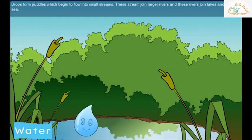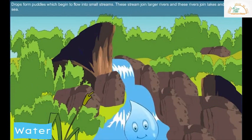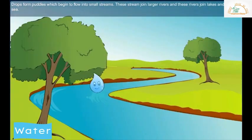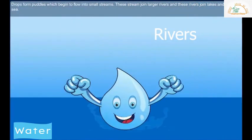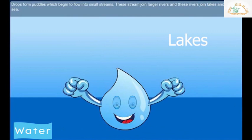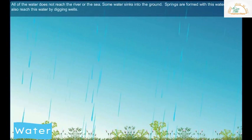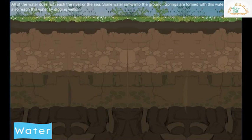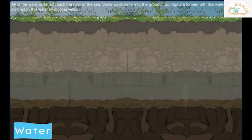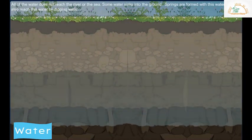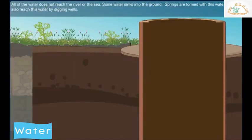These puddles begin to flow into small streams. These streams join larger rivers, and these rivers join lakes and then the sea. All of the water does not reach the river or the sea. Some water sinks into the ground and forms springs. We can also reach the water by digging wells.